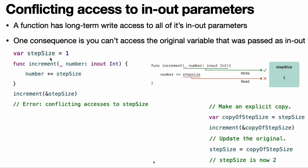Here is an example. In this code, stepSize is a global variable, and it is normally accessible from within increment. However, the read access to stepSize overlaps with the write access to number. As shown in this figure, both number and stepSize refer to the same location in memory. The read and write accesses refer to the same memory, and they overlap, producing a conflict.